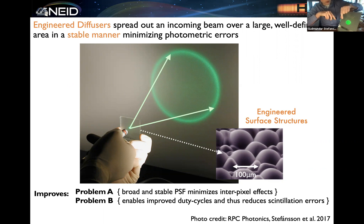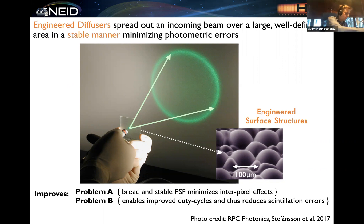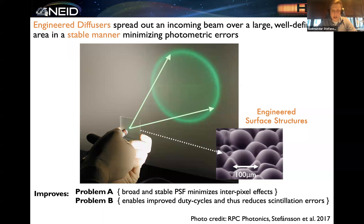We worked with a company called RPC Photonics in Upstate New York to help develop a diffuser for us that resulted in a filled top-hat PSF. This then allows us to spread the light out over many pixels on the CCD. In doing so, this allows us to average over inter-pixel sensitivity effects — the CCDs or detectors we're using aren't perfect; there are always variations in the sensitivity of pixels to the light falling on them. This also opens the door to observe bright stars with big telescopes at very high observing efficiencies, and those are exactly the TESS stars we are interested in following up.